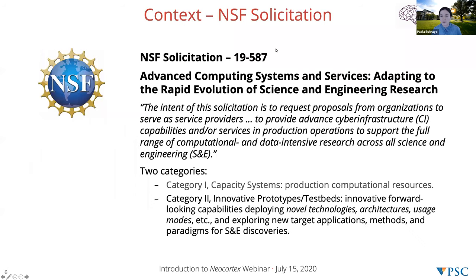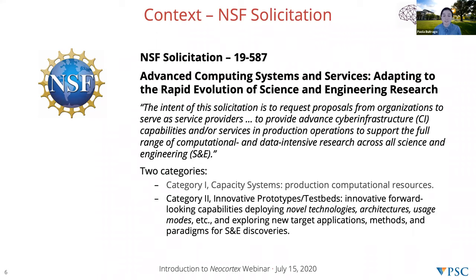So, introduction. I would like to start by setting a little bit of context. NeoCortex is a project that was proposed in response to the NSF solicitation 19-507. When we talk about the cyberinfrastructure landscape funded by NSF, we tend to think of capacity systems — production-ready systems expected to serve the national open science community. Starting in 2019, NSF began requesting a type of system referred to as category two, which refers to innovative prototypes or test beds.